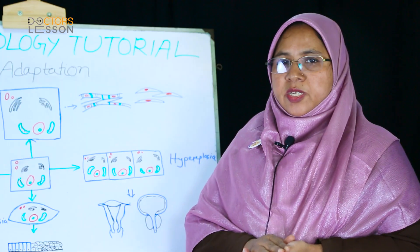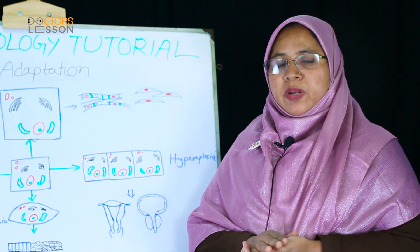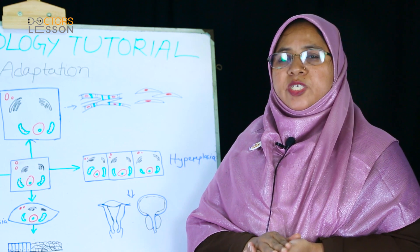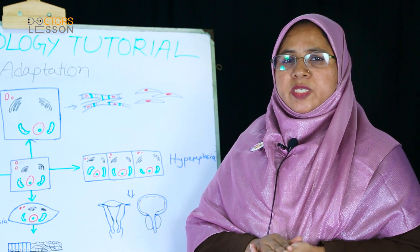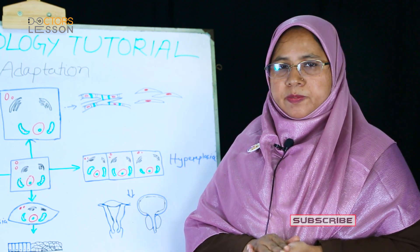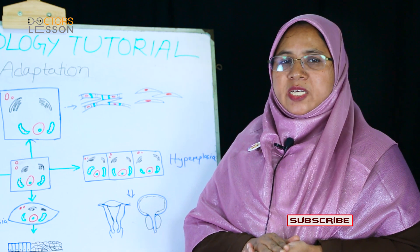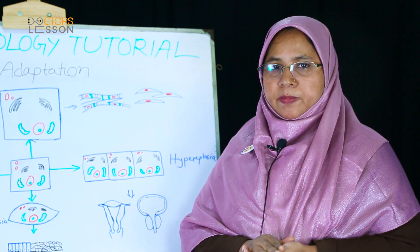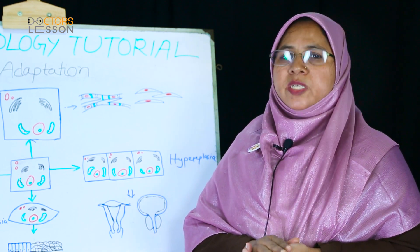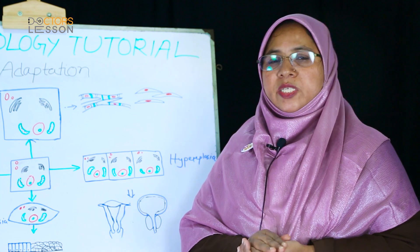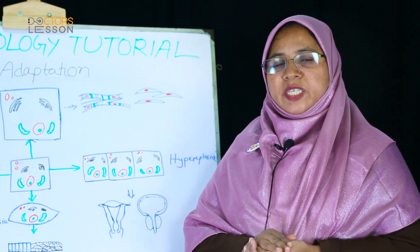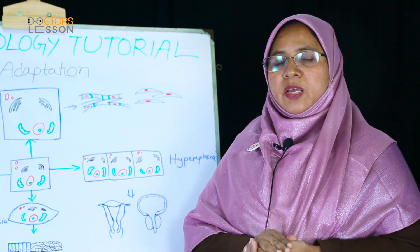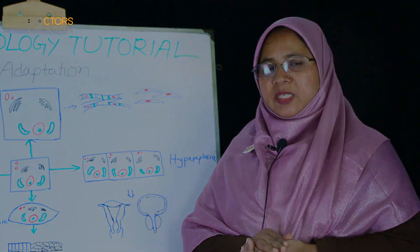In short, cellular adaptation is the protective mechanism of the cell which allows it to withstand an adverse environment. If the adaptive capability is lost, then the cell undergoes injurious changes. In my next class I will discuss the types and mechanisms of cellular injury. Thanks for watching and subscribing the channel.